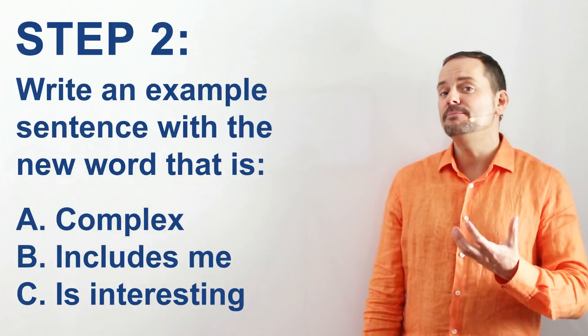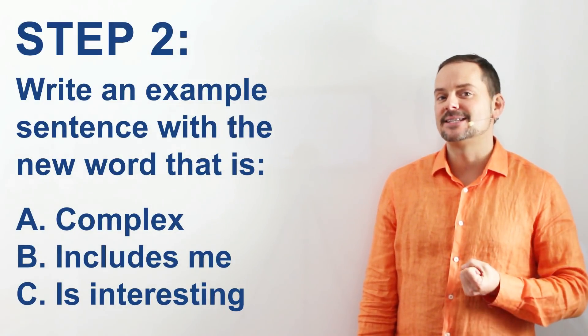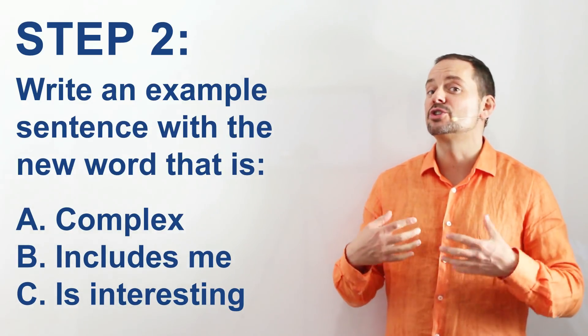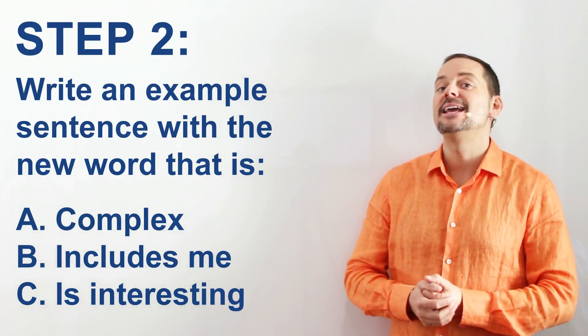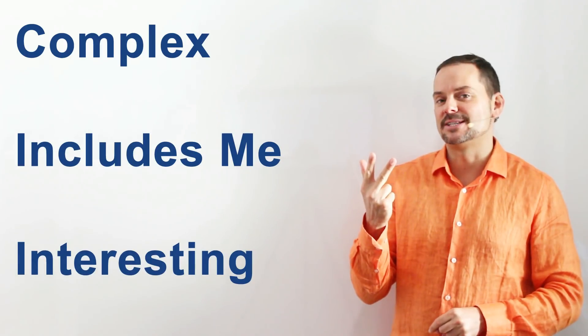For step two, I have to write an example sentence that is complex, includes me or someone close to me, and it has to be interesting. One more time: complex, includes myself, and it's interesting.